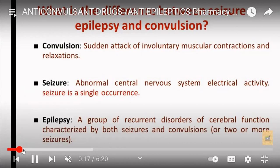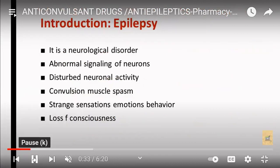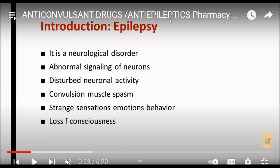Epilepsy is basically a neurological disorder that originates due to abnormal signaling of neurons. This abnormal neurological activity can lead to convulsions, muscle spasms, abnormal sensations, emotions, behavioral changes, and loss of consciousness.